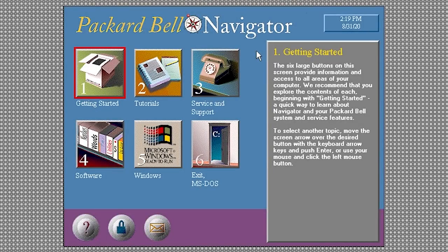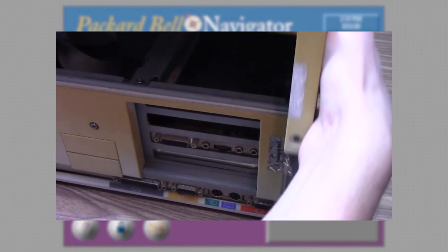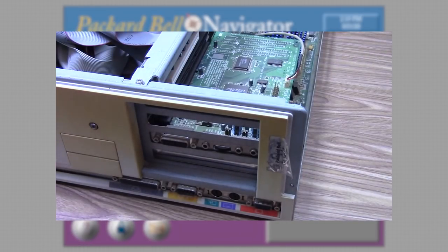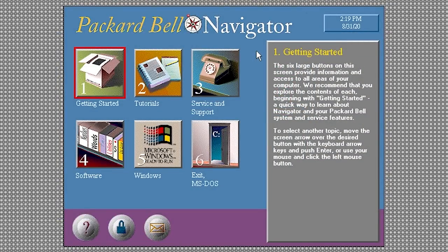Hello everybody and welcome back to another video. In today's video, we're going to be taking a look at Packard Bell Navigator. This was a program that I briefly mentioned in one of my $5 Packard Bell videos, but today we're going to be doing a full video specifically on this program. Packard Bell Navigator was an alternative shell for Windows that was pre-installed on Packard Bell computers beginning in 1993, and it was intended to make it easier for the user to find information and launch programs on their PC.